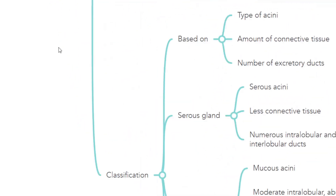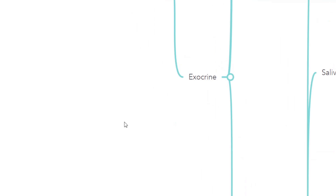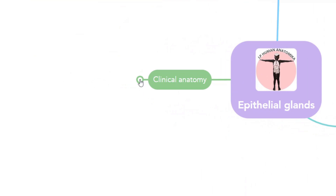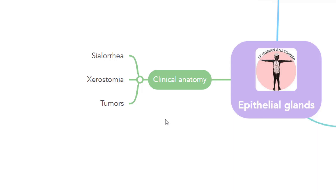Before concluding, there is another feature to discuss — clinical anatomy. Clinical anatomy includes sialorrhea, which is excessive secretion; xerostomia, which is decreased secretion; and tumors of the salivary glands. With this, we conclude the epithelial glands. See you in the next section on how to draw the salivary glands microstructure. Thank you.